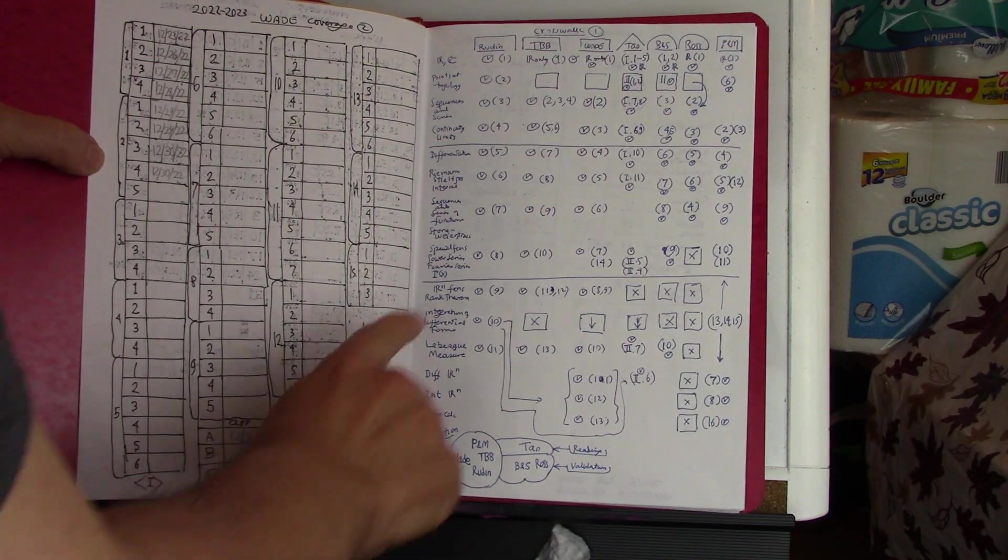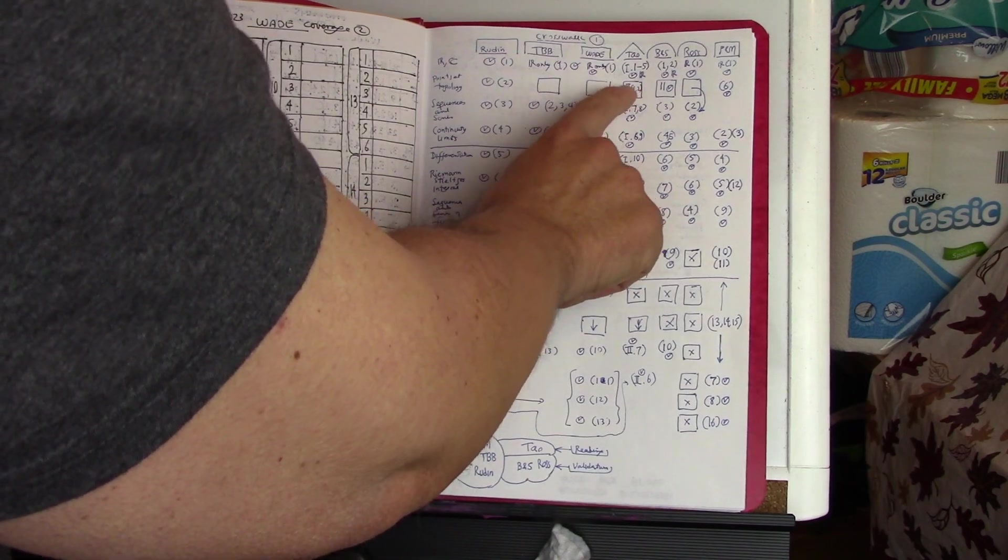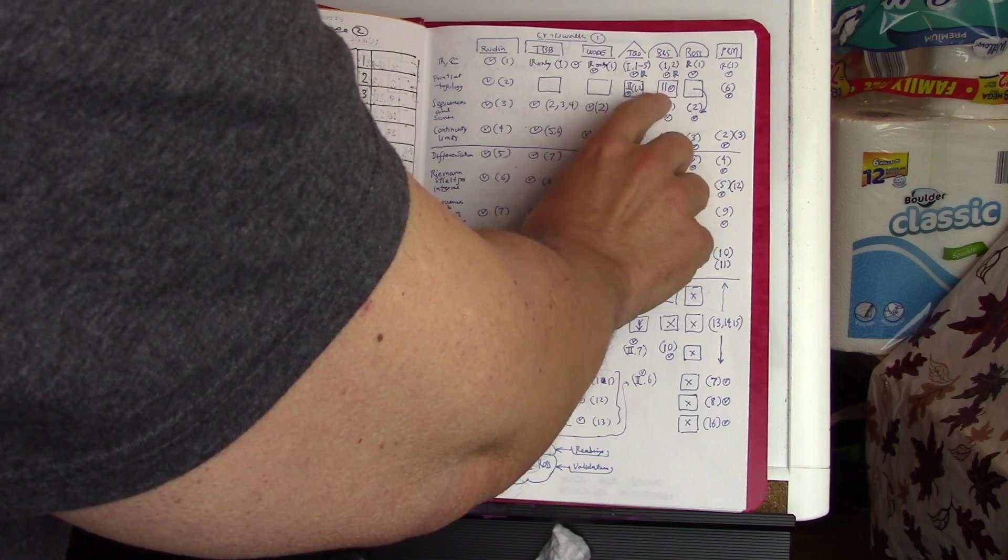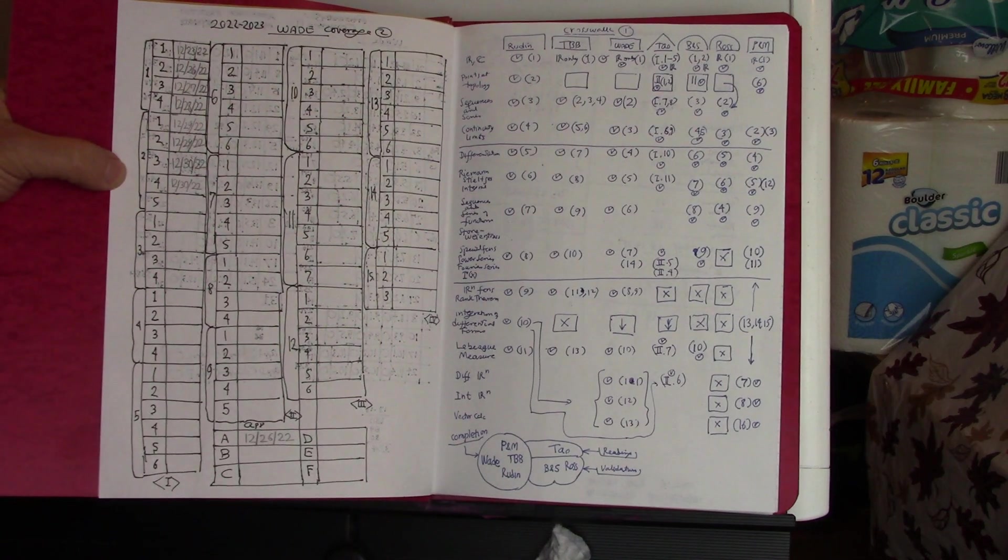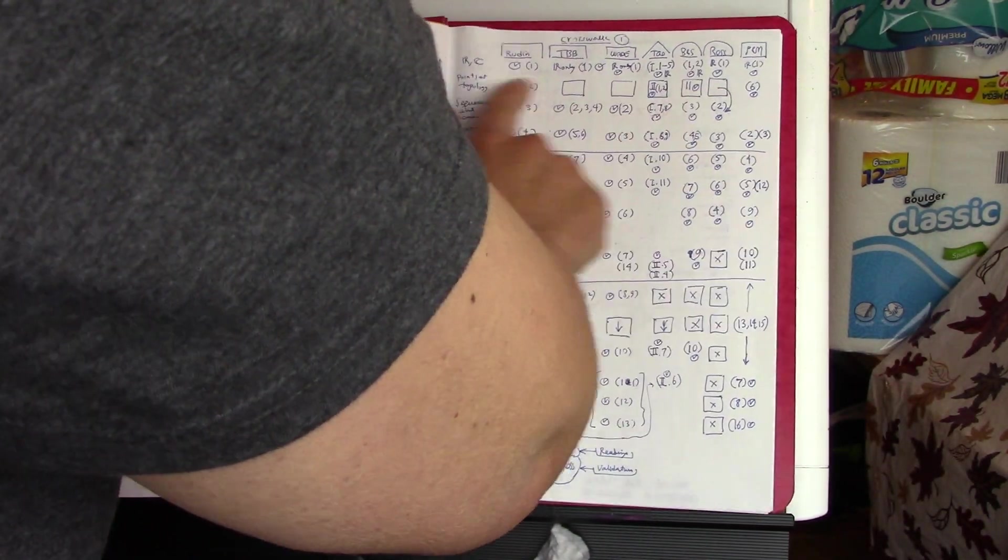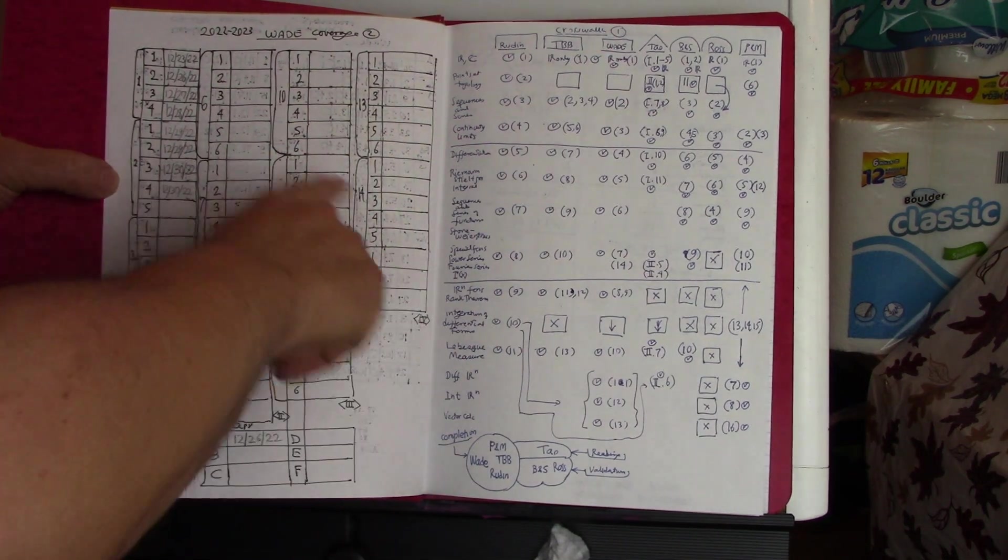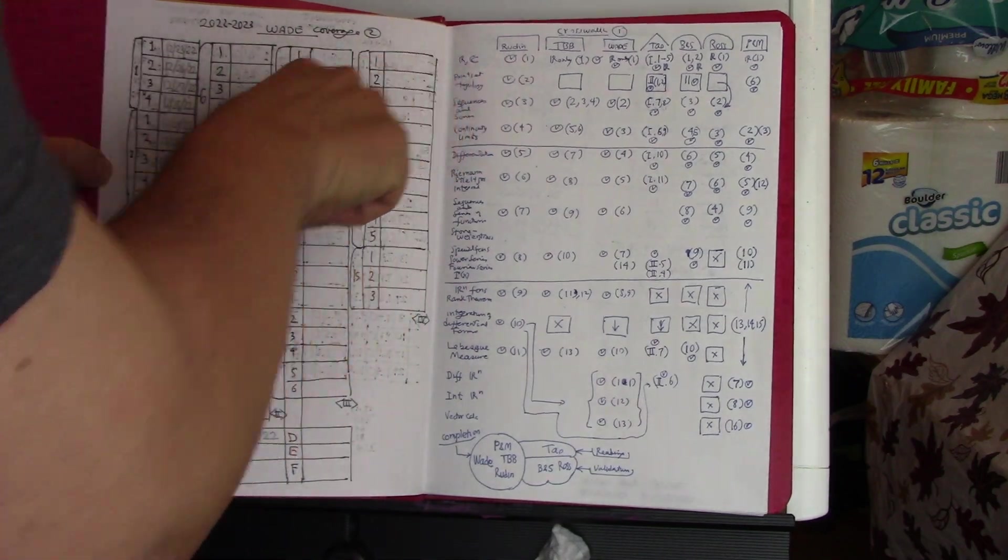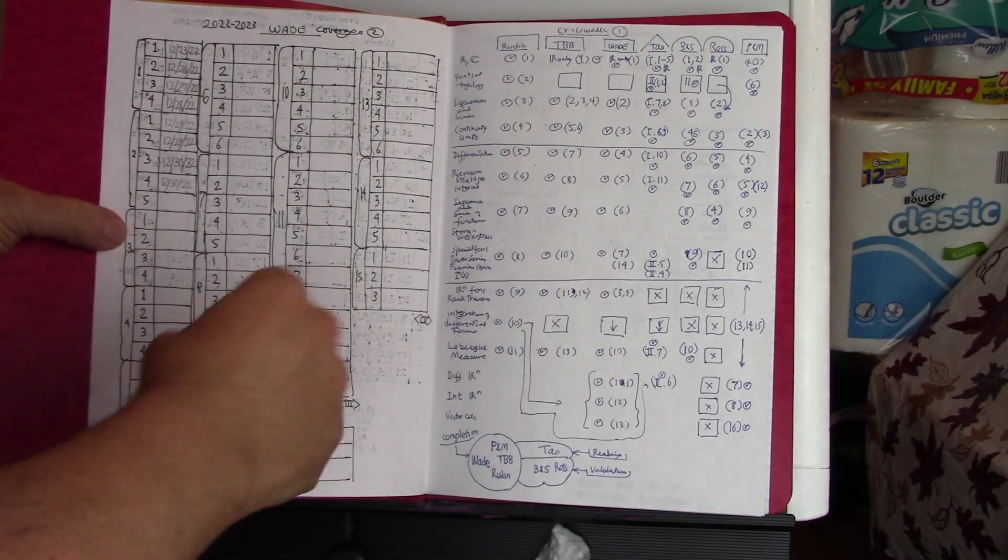Terence Tao has something in his second volume, and Bartle and Sherbert has a little something in chapter 11. So I'll figure out how to fill this material in. And I'm sure if I read ahead enough in Wade, I'll go and do this chapter in Rudin and actually take notes.